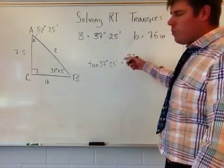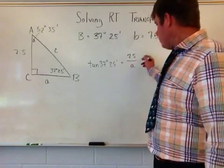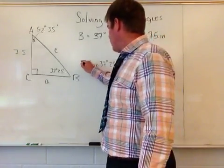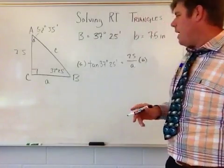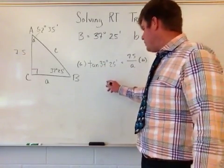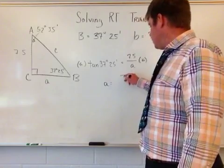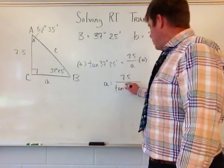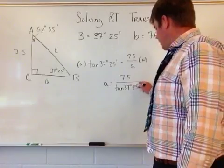So to solve for this, I would multiply both sides by A. So multiply both sides by A. You can think about doing this. So multiply both sides by A and then I'm left with that. And then I divide by the tangent of 37.25. So you know that A should be equivalent to 7.5 divided by the tangent of 37 degrees, 25 minutes.